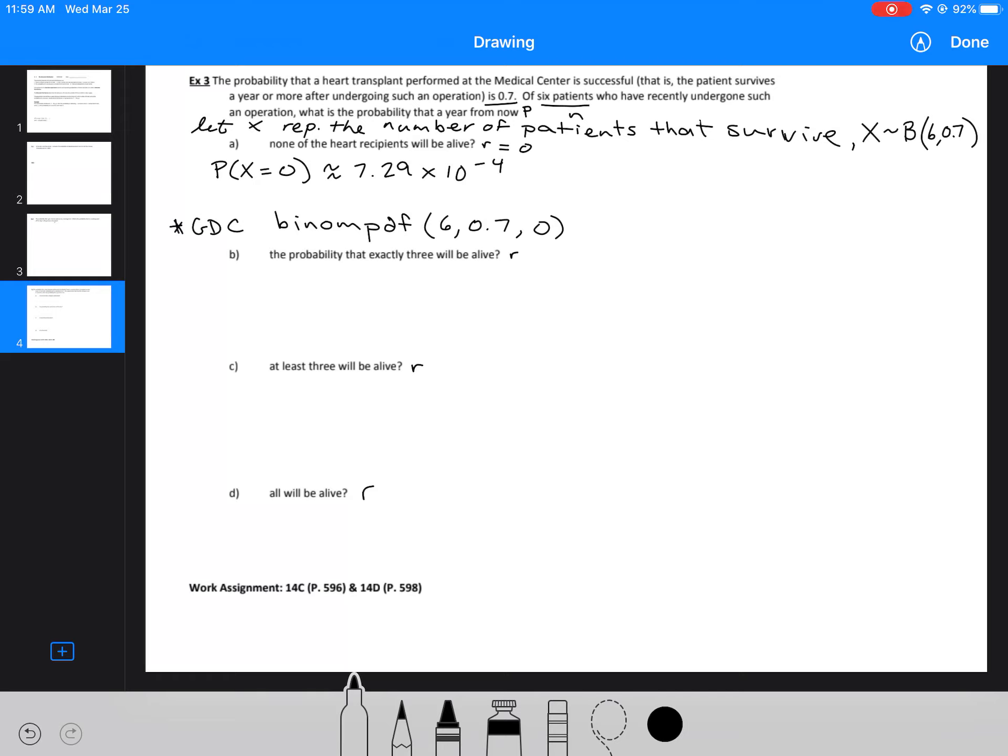Let's move on to the next one. Now we're looking at the probability that exactly 3 will be alive. So now R is equal to 3. We're going to repeat the same process, except our last argument is going to be 3 instead of 0. So 2nd VARS, scroll down to binomial PDF, and you're going to enter the same argument: 6, 0.7, and then 3. Now we get approximately 0.185.